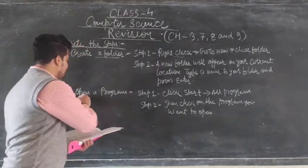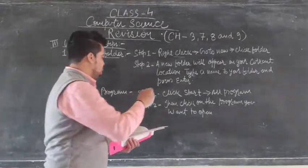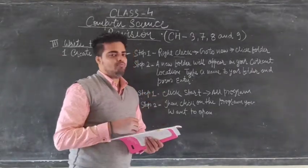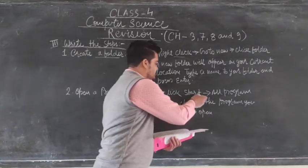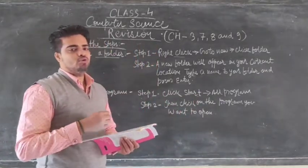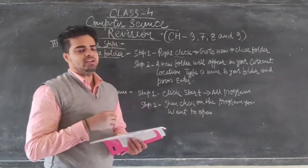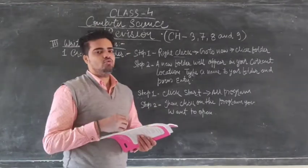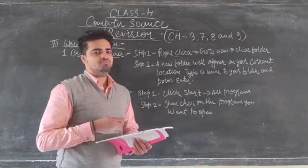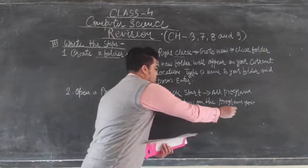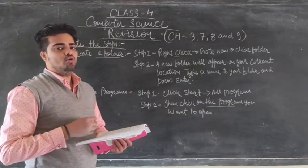Second question, open a program. So how we can open a program? Step 1, first we have to click on the start button and then go to all programs. And step 2, then we have to click on the program we want to open. So after going to all programs, we have to click on the program that we want to open.